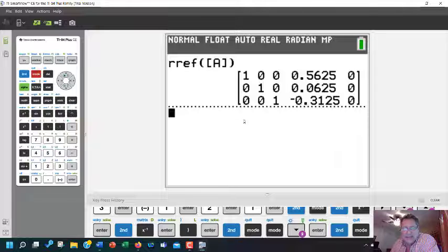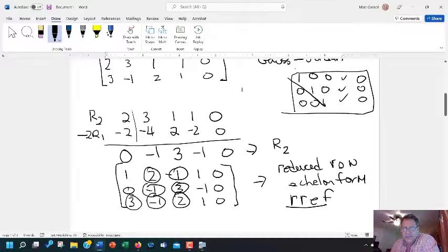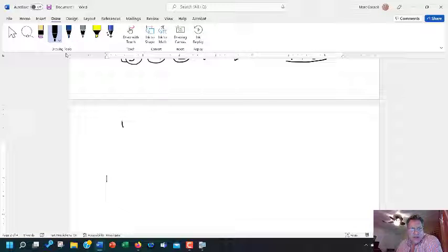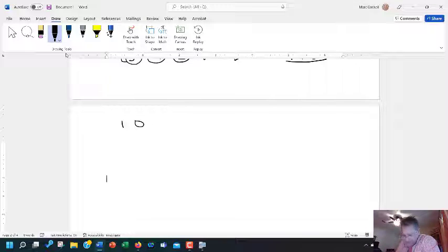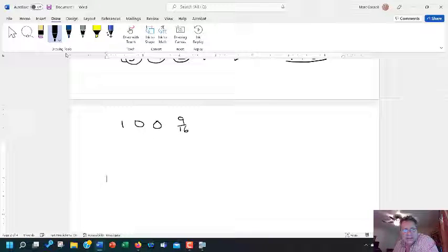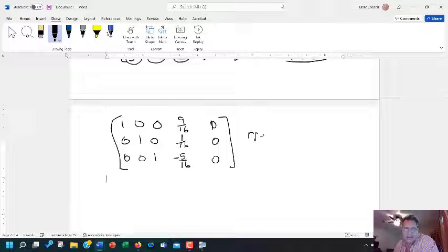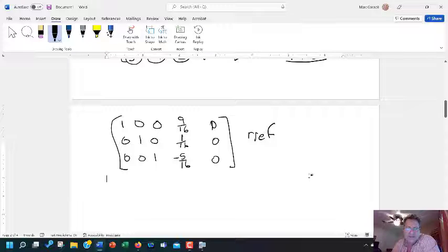Ultimately what I've got here is a solution. I've got [1, 0, 0, 9/16, 0; 0, 1, 0, 1/16, 0; 0, 0, 1, -5/16, 0]. So this is going to be my RREF that I can get off my calculator. Very nicely done. Now, if you want to look at that and understand that, this is a solution to that system that we had before. This is A, B, C, D, and my coefficient on the other side, which was zero.